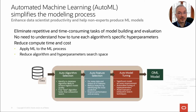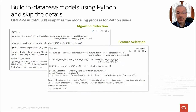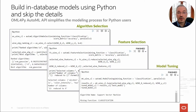Let's look at the AutoML API functions in OML4Py. We start with algorithm selection, where the top-end algorithms are ranked. We create an algorithm selection object, choose classification or regression, and use the accuracy score metric. Invoking select for the top four algorithms, we see that SVM Gaussian is ranked highest. Next, we perform feature selection — invoking reduce, we see 13 columns reduced to 9. Then model tuning optimizes the hyperparameters for the selected algorithm and features, producing our final model.